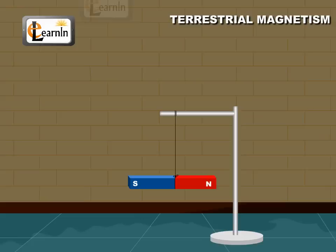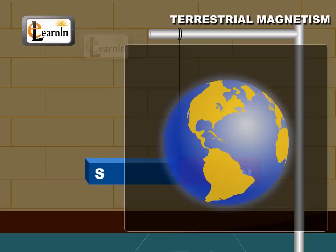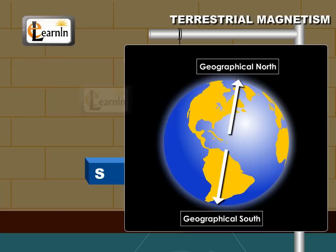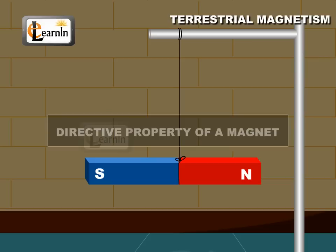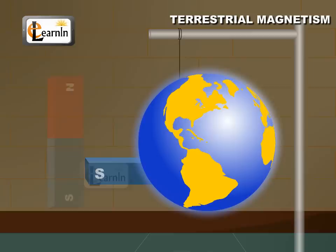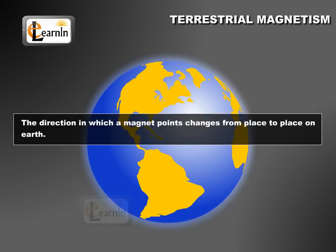Terrestrial Magnetism. A freely suspended bar magnet approximately points towards the geographical north with its north pole and the geographical south with its south pole as it comes to rest. This is also known as the directed property of a magnet. The direction in which a magnet points changes from place to place on earth.